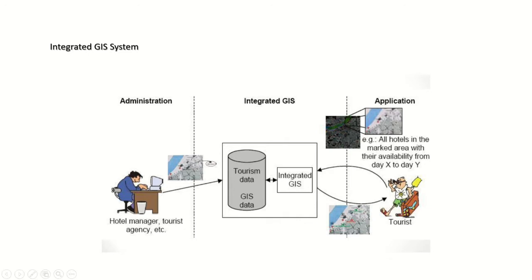This picture shows how an integrated GIS system works in the tourism sector. In the administration section, tourist agencies, hotel managers, or other tourism department staff provide their tourism attractions as tourism data. This GIS-based data is changed into integrated GIS data, so that tourists ultimately receive precise data about tourist sites.